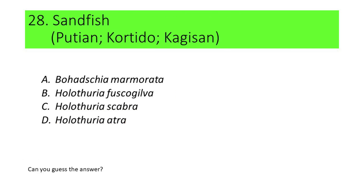Number 28. This species of sea cucumber is commonly called sandfish. Locally, this is called putian, cortido, or kagisan. A. Bohadschia marmorata, B. Holothuria fuscogilva, C. Holothuria scabra, and D. Holothuria atra. Can you guess the answer?